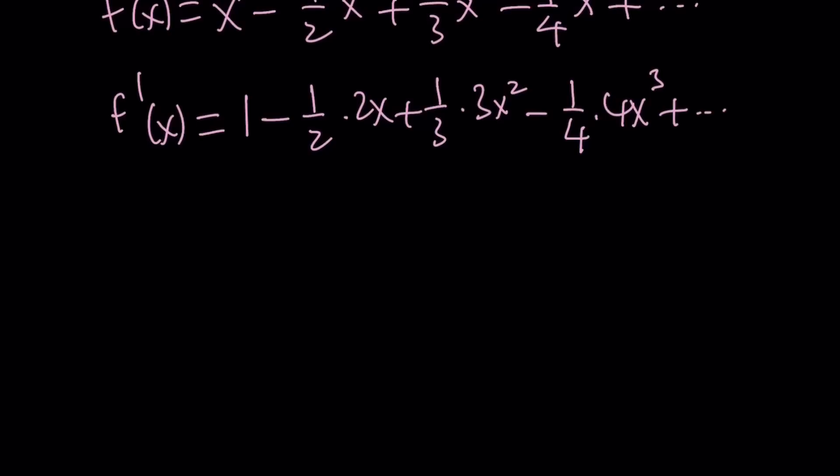And you can simplify this. 1 minus, now 2 cancels out, 3 cancels out, 4 cancels out. Pretty much all the coefficients cancel out, leaving us with 1 or negative 1. This is going to look like 1 minus x plus x squared minus x cubed plus x to the fourth minus x to the fifth plus dot dot dot. This is the derivative of f, remember. Our goal is to find f(1) at the end.